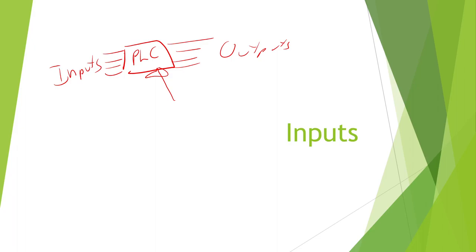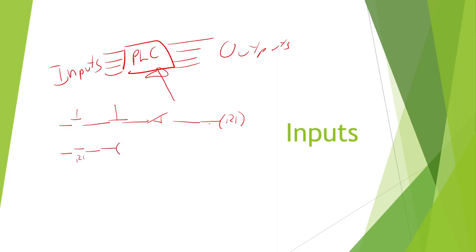You'd have your assembly line, which might look exactly the same today as it did back then, except instead of having all your inputs wired into a PLC, you would have your start button going to your stop button, then to your limit switch, and finally to a relay called R1. The output of that relay would be a normally open contact, and that would control your contactor — whatever motor it is.